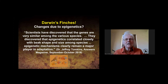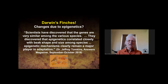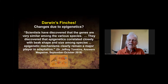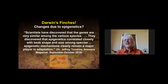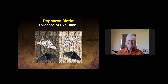A quote from Dr. Jeffrey Tompkins in 2019 Answers Magazine: 'Scientists have discovered that genes are very similar among the various species, and that epigenetics correlated closely with beak shape and sizes among species. Epigenetic mechanisms clearly remain a major player in adaptation.' Epigenetics is a partial answer to how something interacts with the environment and influences whether genes are turned on or off. People say, 'See, isn't that evolution?' No — it just makes the genetic picture far more complex and points to design.